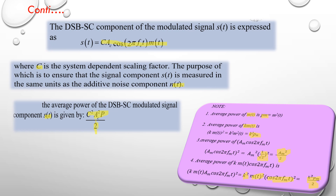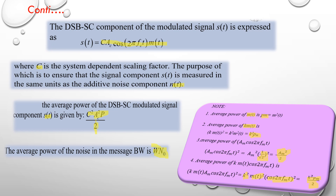So s(t) in terms of average power equals C² × A_c² × P / 2. The average noise power in the message bandwidth is W × N₀. So the average power of the DSBSC signal is C² × A_c² × P / 2, and the average noise power in the message bandwidth is W × N₀.